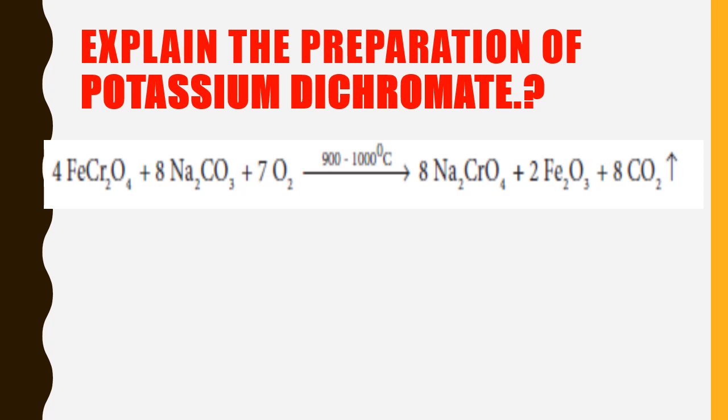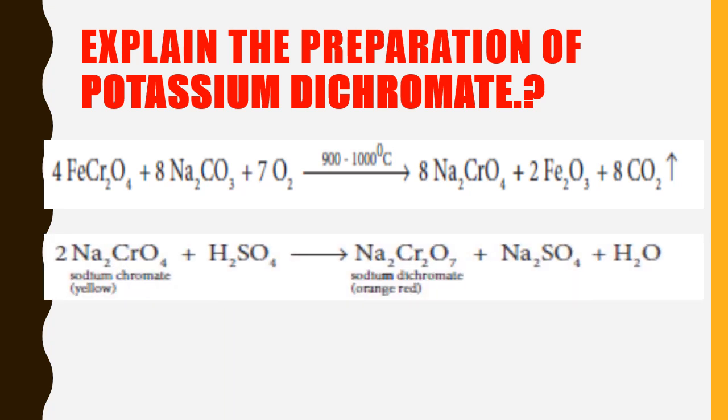The other two products are by-products: iron oxide (ferric oxide) and carbon dioxide. Both can be removed. In the next equation, we start with sodium chromate. The sodium chromate color is also given.